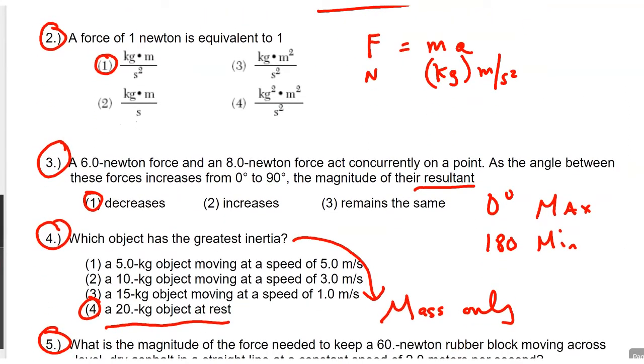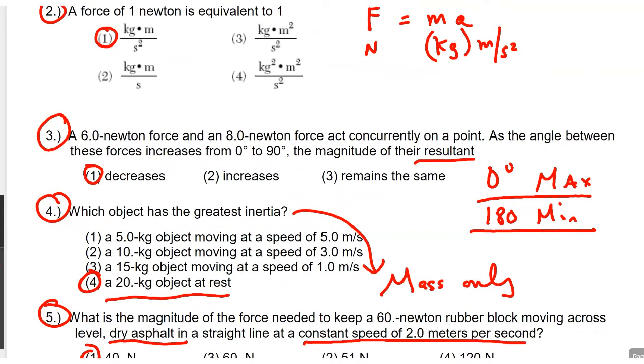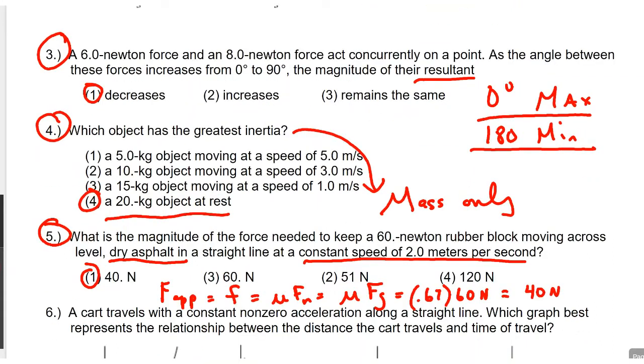Oh, this is a good one. Know with resultant. Two forces have a certain resultant. When there's zero degrees, it's the maximum. When it's 180, it's a minimum. So if you're going from zero to 90, you're going from the maximum of zero away from zero and towards 180. You don't quite get to it, but you're going towards it. Which one has the greatest inertia? Very likely to be on your test somewhere inertia. It only depends on mass.